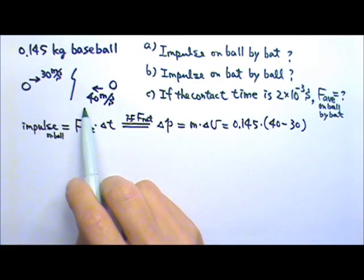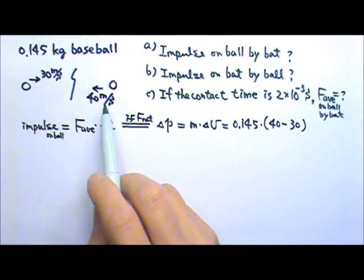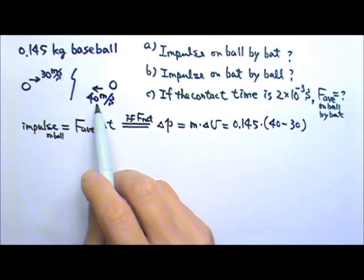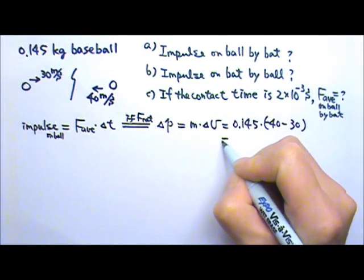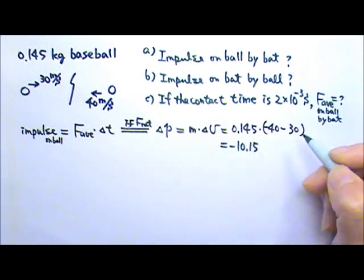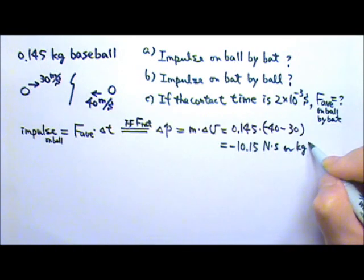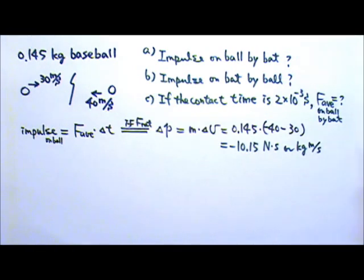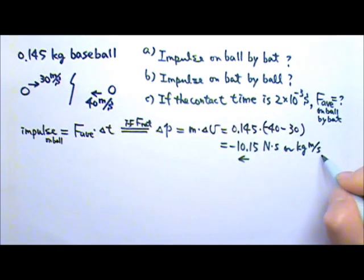Whichever coordinate system you choose, you just have to be consistent with it. In this case, I'm going to use to the right as positive. That means the 40 meters per second going to the left is negative. So delta P equals 0.145 × (−40 − 30) = −10.15. The unit can be newton-seconds or kilograms meters per second. This negative means the impulse is going to the left, so this is the answer for part A.